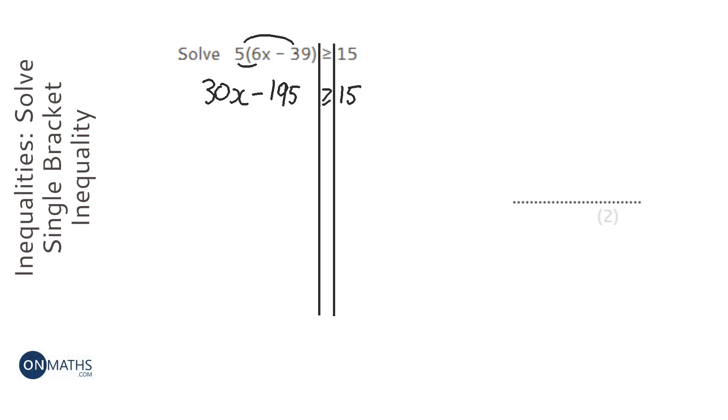And be careful to always put the greater than or equal sign in rather than equal sign. So we're going to plus 195 both sides. So we've got 30x is greater than or equal to 210.